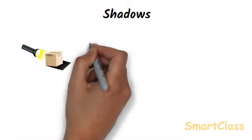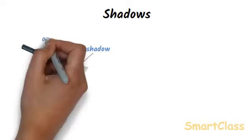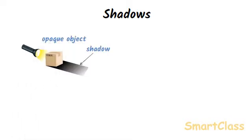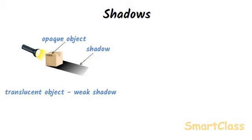Shadows: When an object is placed in front of a source of light, it produces a shade behind it. The shade cast by an object is called its shadow. Shadows are formed when light is stopped by an object. An opaque object stops the light completely, so an opaque object casts a dark shadow behind it. A translucent object casts a weak shadow.